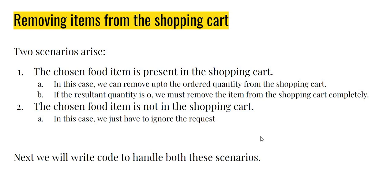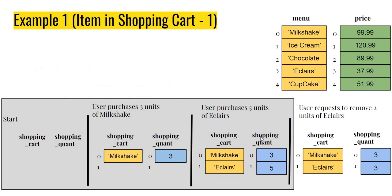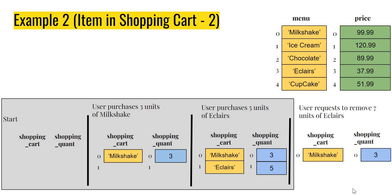We will write code to handle both scenarios, but first let's walk through some examples. Case one: the user has ordered three units of milkshake and five units of eclairs, then requests to remove two units of eclairs by entering minus two. This is an easy case — five units are present, so we remove two, and the shopping cart ends up with three milkshakes and three eclairs.